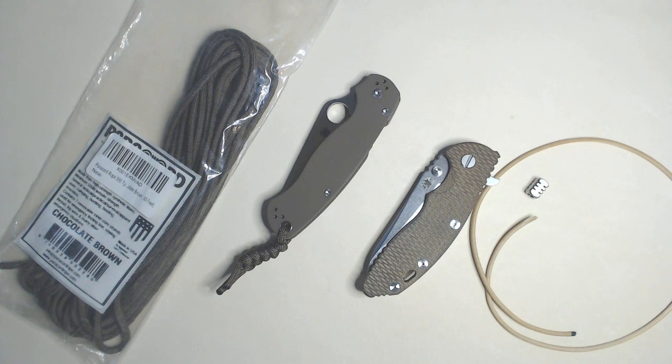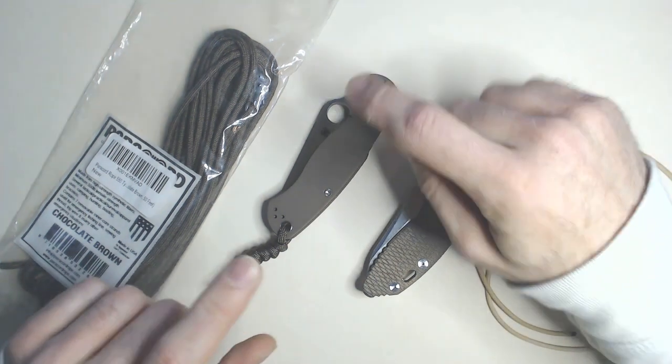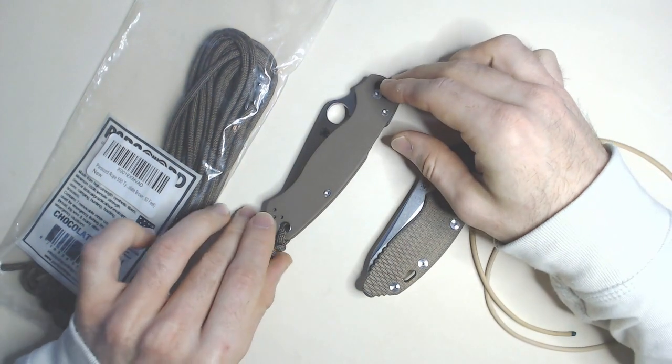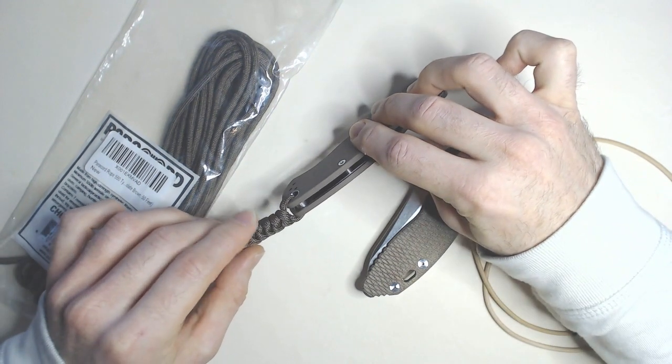So if you've seen my other videos you've probably noticed that I do have lanyards on most of my folders that I carry. Now you'll find that some manufacturers will automatically put them on, but not many do. Say for instance, Chris Reeves will most likely put them on all of his folders there, the Sebenza and so forth, and I believe the knot that he has is a snake knot.